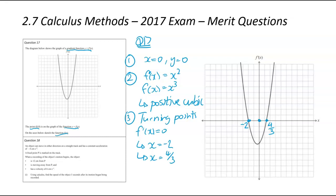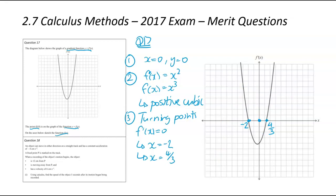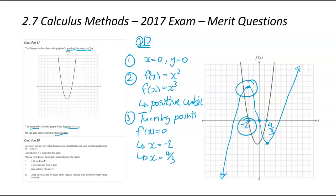Starting with the origin (0, 0), the graph must go through there. It's a positive cubic, so it goes up through that point, then down, then up again. There's a maximum turning point at x equals negative 2 and a minimum at x equals 4 over 3. We connect the dots — the graphs never have to be perfect to get your merit marks. The key criteria: turning points at the right x values, it's a positive cubic, and it passes through the origin (0, 0).